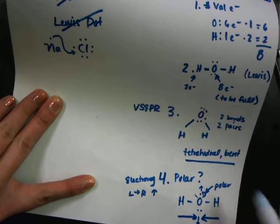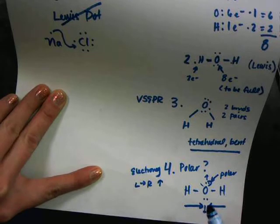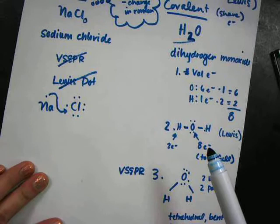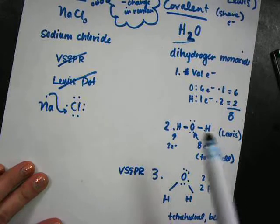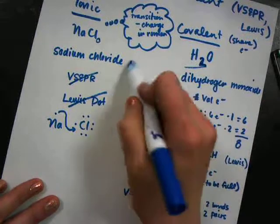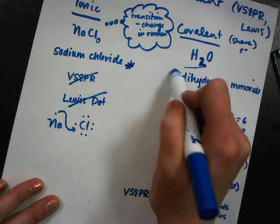So those are the things that you'll need to know for your test tomorrow. Polarity, the VSEPR model, and how to use your chart. How to make this Lewis dot diagram. So figuring out how many valence electrons it has. And then naming.